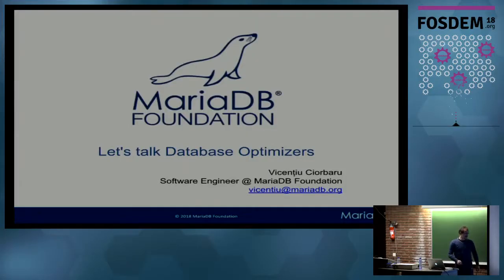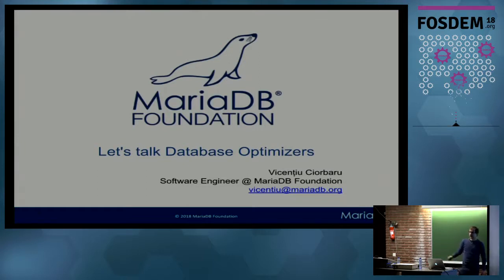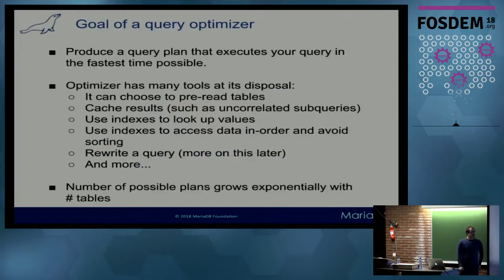Let's get started. Thank you everybody for coming. My name is Vicencio, I am a software engineer for the MariaDB Foundation. Today I'm going to give you a brief overview of the new developments in optimizers. We've already heard Oystein's talk about histograms, which is something MariaDB has in a different format in 10.1 and onwards. So the goal of the query optimizer is: given a certain SQL query, to achieve the fastest execution time possible.